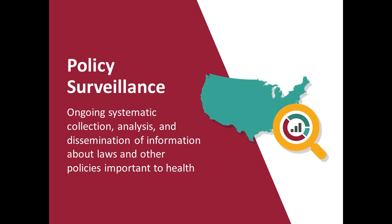A third element of legal epidemiology is policy surveillance — the ongoing systematic collection, analysis, and dissemination of information about laws and other policies important to health. Policy surveillance is related to both legal etiology and legal prevention and control. It also directly serves advanced research methods that systematically analyze how laws and policies affect health over time and across jurisdictions.